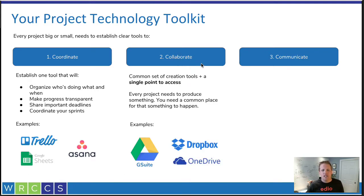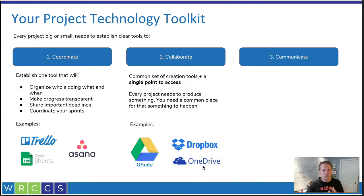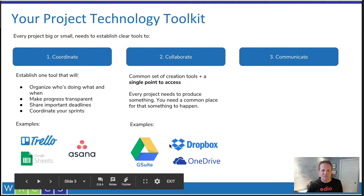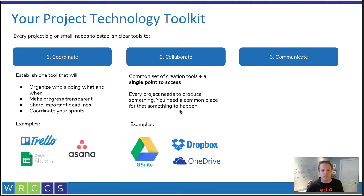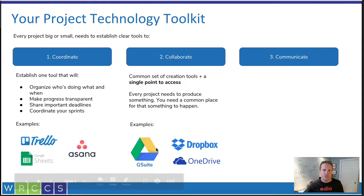The second category is collaborate. Every project needs to produce something — whether you're producing documents, building a website, or creating curriculum. If one person uses one tool and another person uses a different tool, and there's no common place to store things, things get confusing really quickly. Examples include Google Suite and Google Drive, Dropbox, and if you're in the Microsoft world, OneDrive and Office 365. At minimum, you need a single place to store everything so that as the project unfolds, you don't have to go hunting for documents.